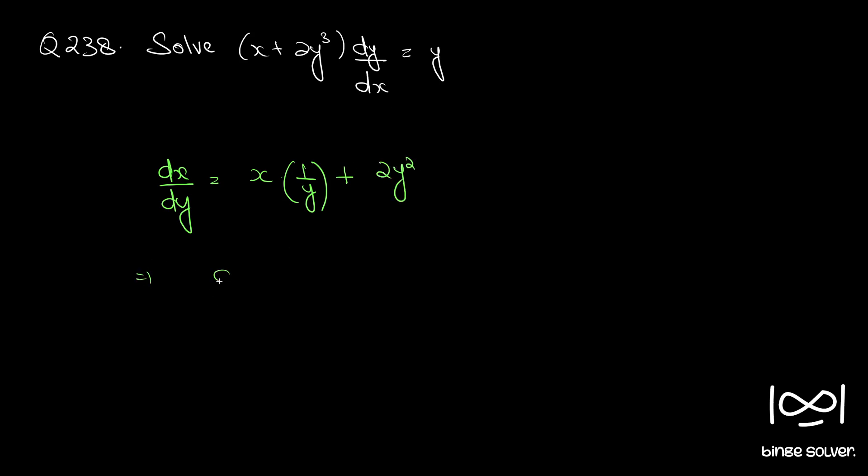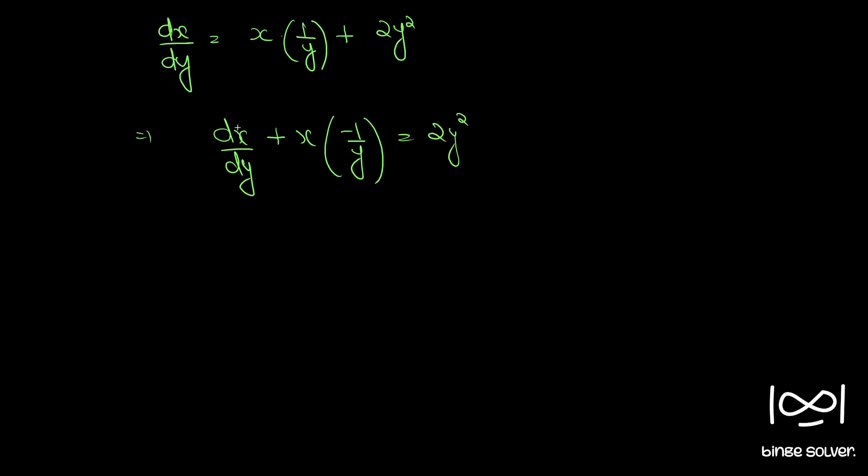We can also write dx by dy plus x into minus 1 by y equal to 2y squared. Now this is in the standard form.